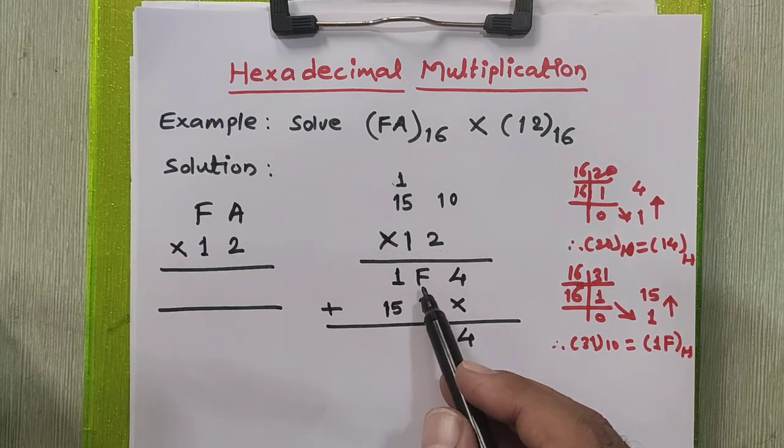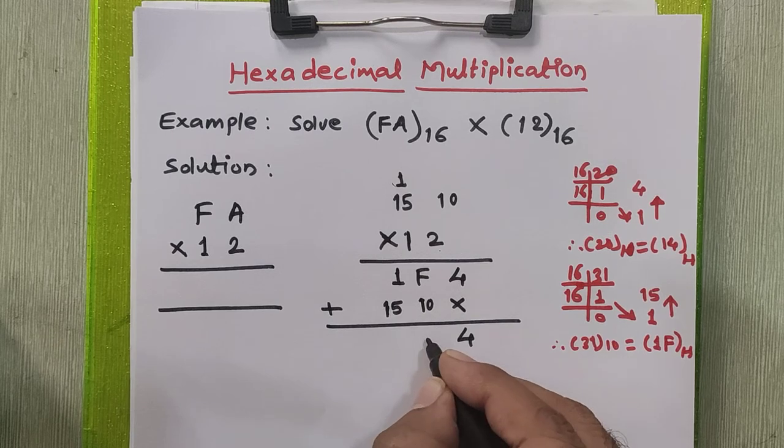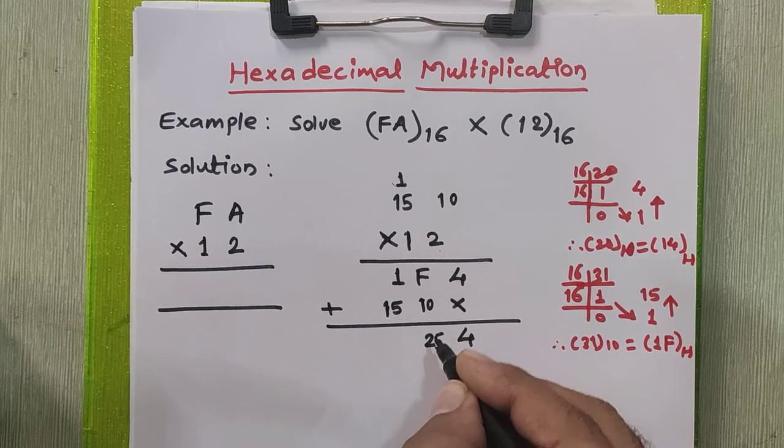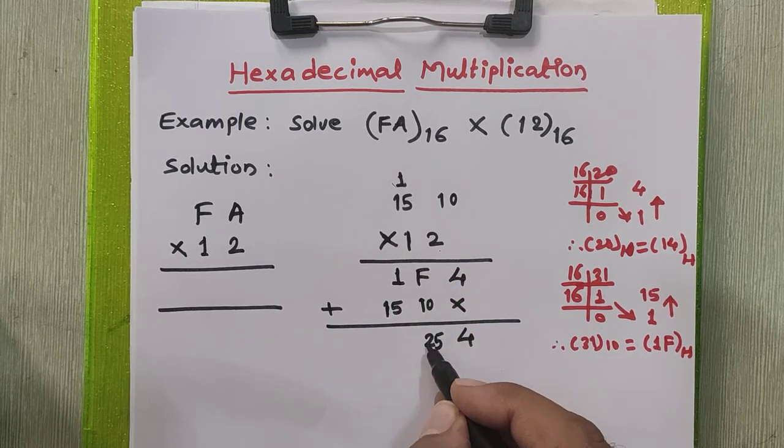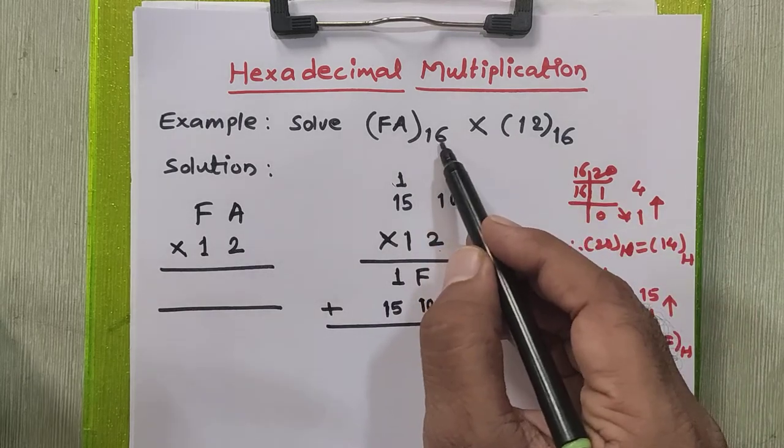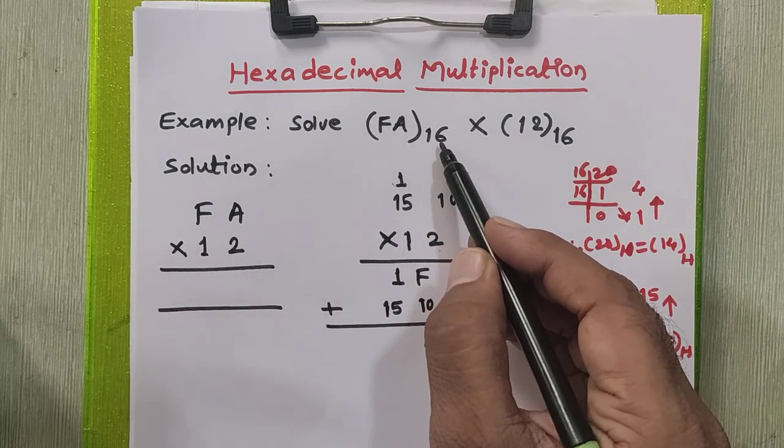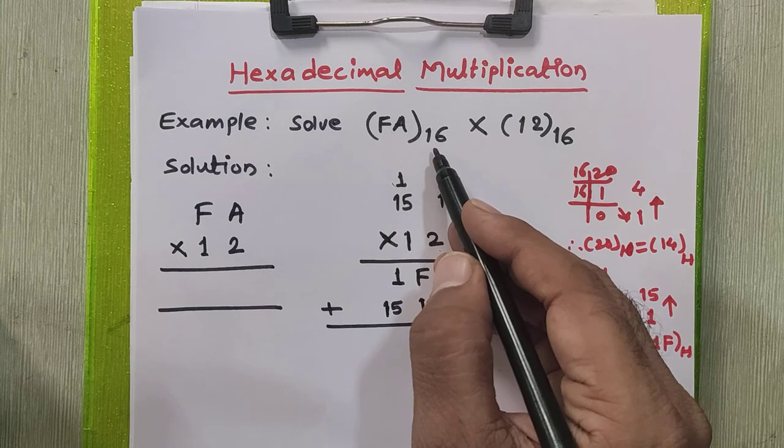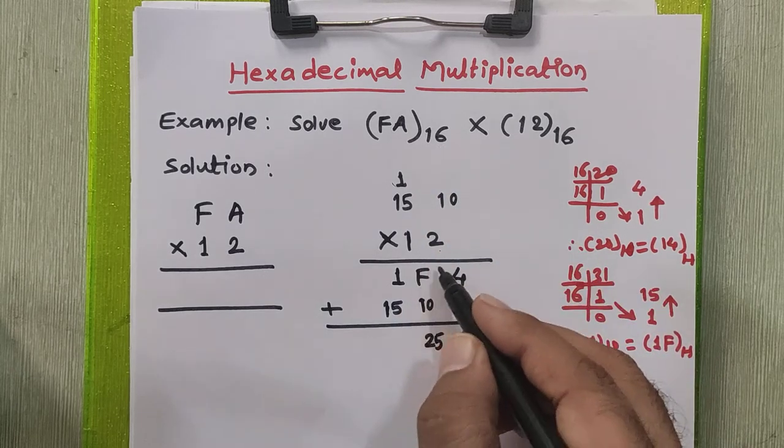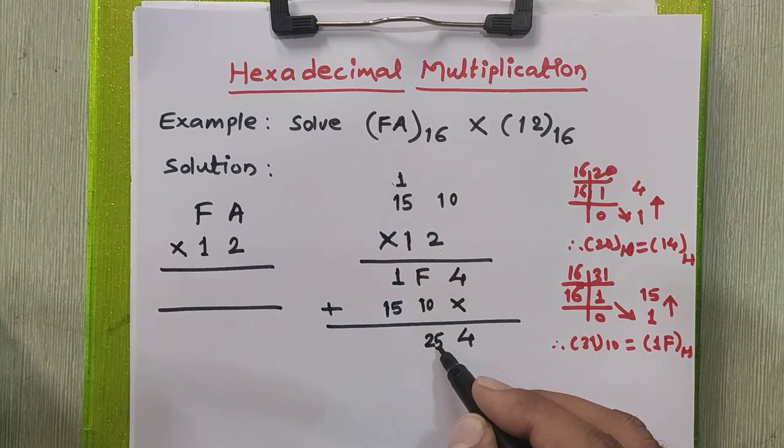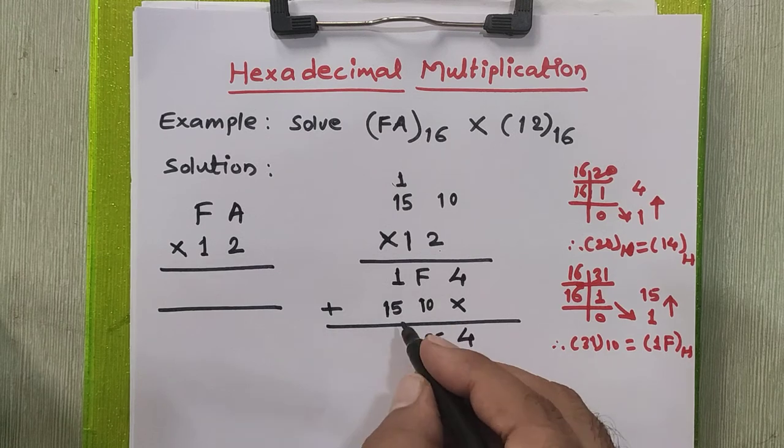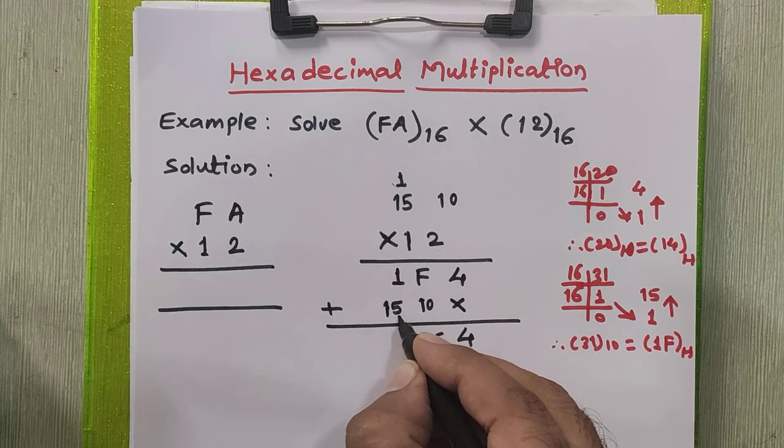Now 4 plus 0 is 4. Now this F plus 10. What is F? F is 15. 15 plus 10 is 25, which is greater than the last valid number of this hexadecimal number system, that is 15. So whenever the sum of 2 digits exceeds 15, we need to generate a carry to the next step. So this is the carry here.